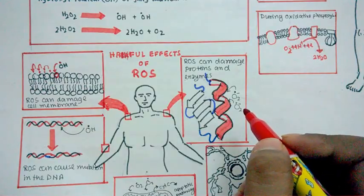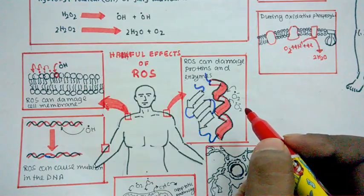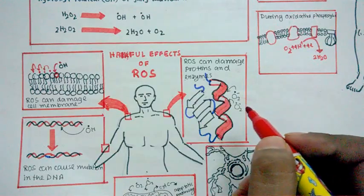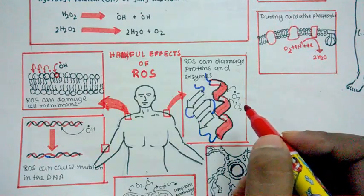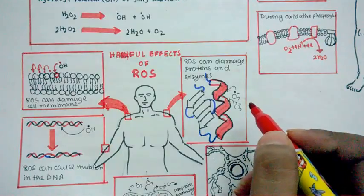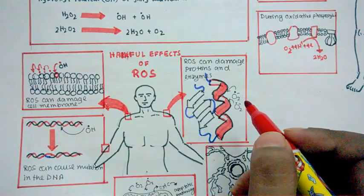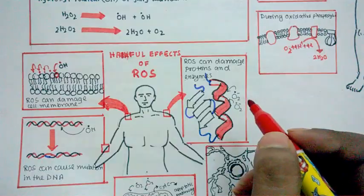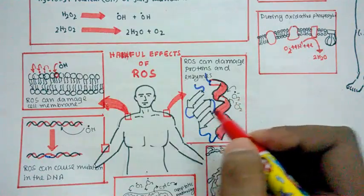By this action, ROS is actually able to reduce the functionality of that particular enzyme. Not only enzymes, many signaling molecules and many other structural proteins like collagen are also harmed by these ROS.